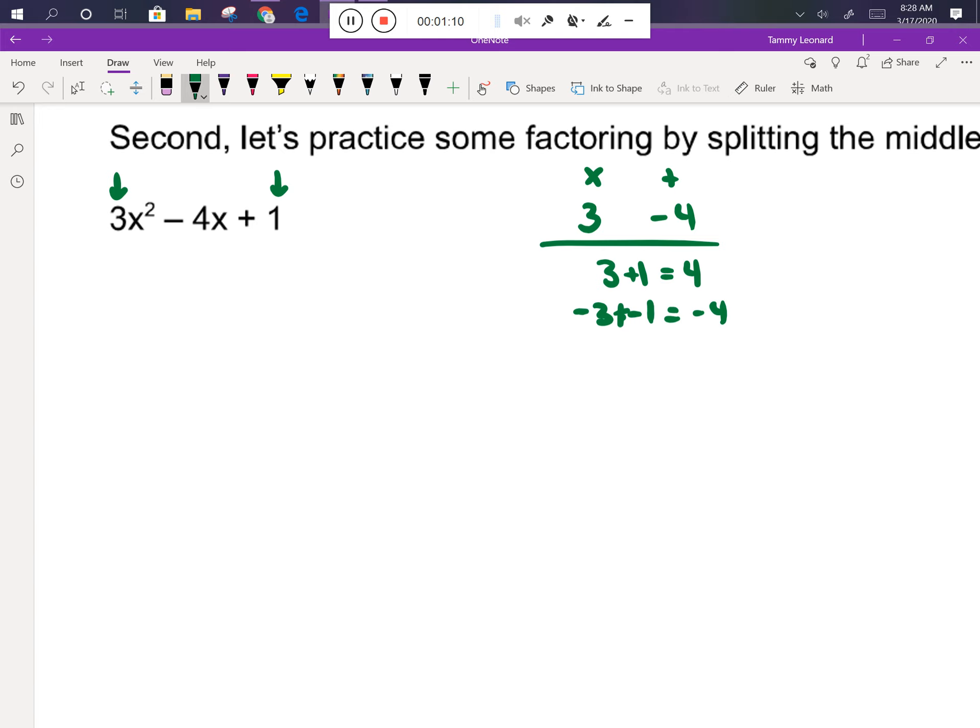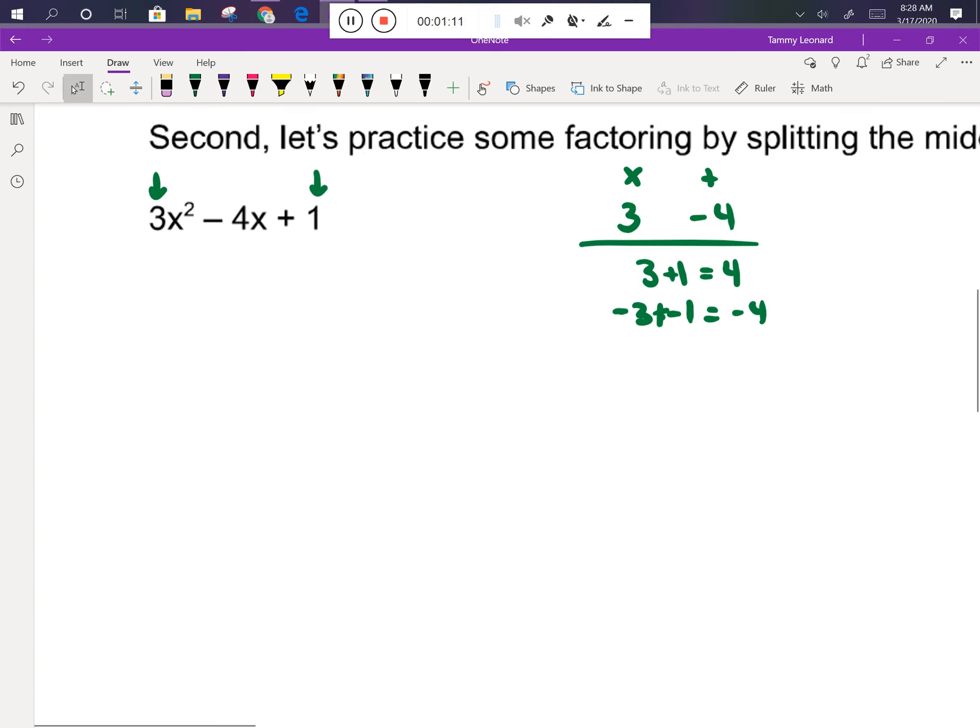Those are the numbers I can use to split the middle term. So I'm going to start by keeping my 3x². Then I'm going to split -4x into -3x and -1x. And then I'm going to bring down the +1 at the end.